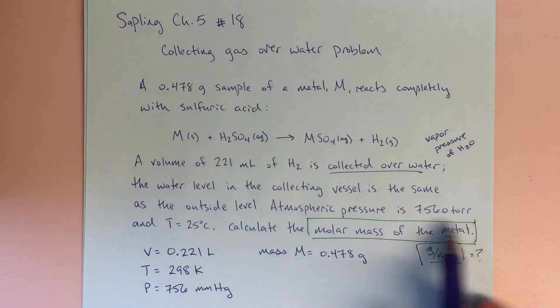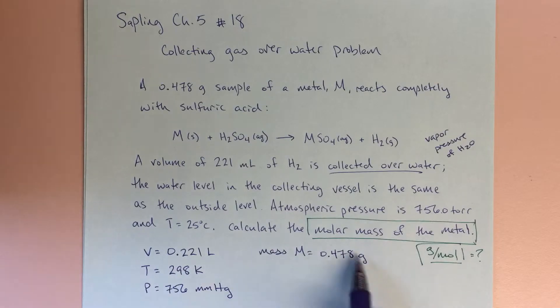Calculate the molar mass of the metal. So this is what we're looking for, molar mass of metal. Grams over moles, that's what we're looking for, for the metal. And we're already given the mass, right? So all we're looking for is the number of moles of M, and we'll be able to solve for the molar mass. So that's really what we're looking for here.